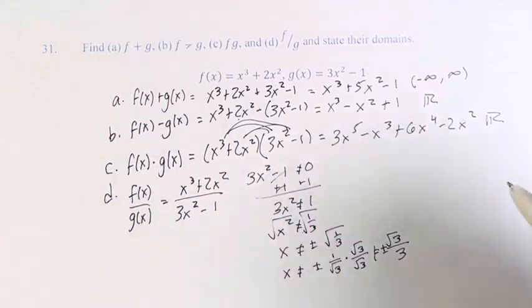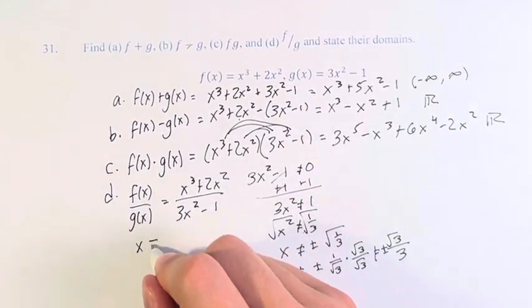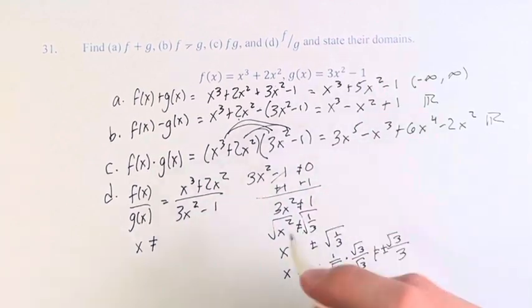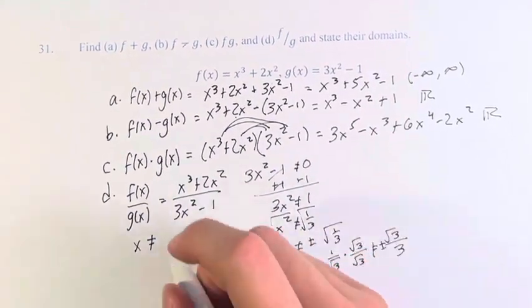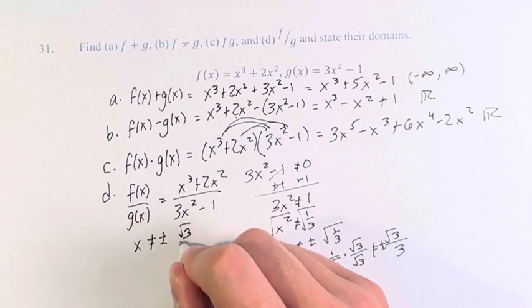So we can just write that as the domain. You can also do it in interval form, but I think just writing it as what it cannot be is a little bit easier. Plus or minus the square root of 3 over 3.